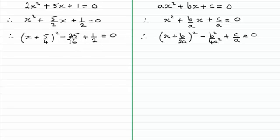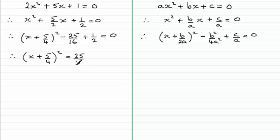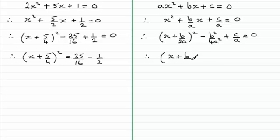Next, in the numerical example, I'm going to add 25 sixteenths to both sides and subtract one half. So we're left with x plus 5 over 4 all squared equals 25 sixteenths minus one half. Doing the same algebraically: add b squared over 4a squared to both sides and subtract c over a from both sides, giving x plus b over 2a all squared equals b squared over 4a squared minus c over a.